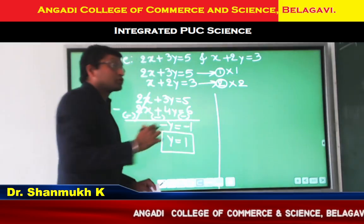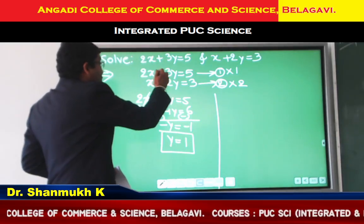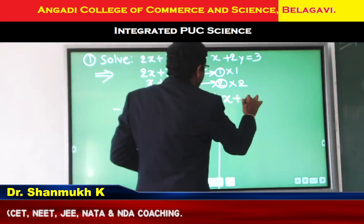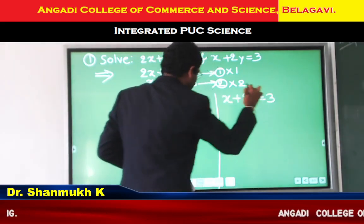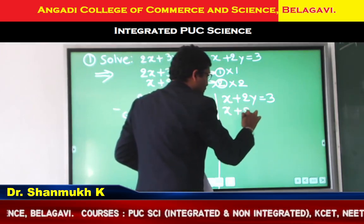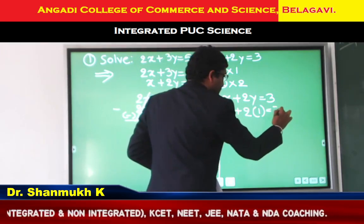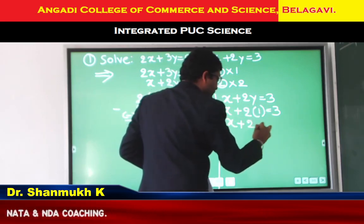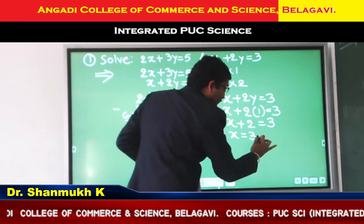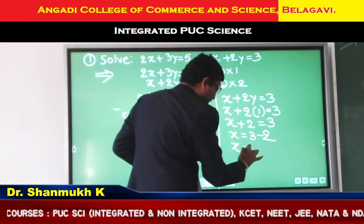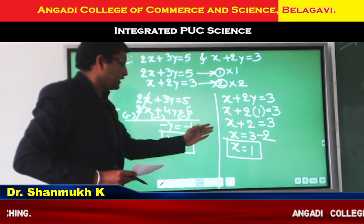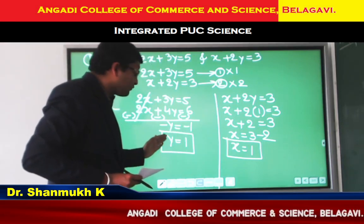We should also obtain the solution for X. We have a system of two linear equations — we choose any one. We will take the second equation: X plus 2Y equal to 3. Substitute the value of Y as 1. We get X plus 2 into 1 equal to 3, so X plus 2 equal to 3. Transposing 2 to the RHS, it becomes minus: X equal to 3 minus 2, which is 1. So we get the value of X as 1 and the value of Y as 1.